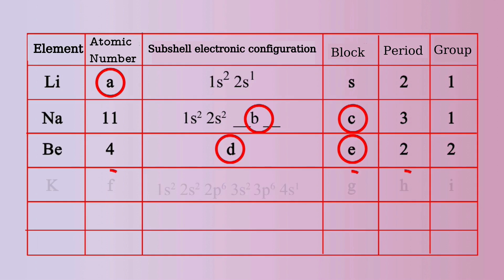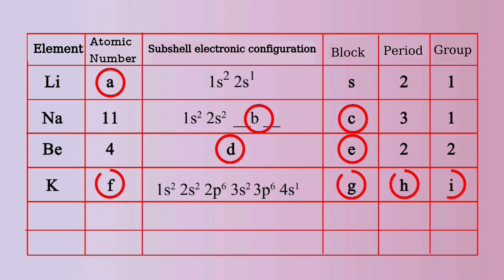For the element Potassium, the atomic number can be written. Its subshell electronic configuration is 1s2, 2s2, 2p6, 3s2, 3p6, 4s1. Its block, period, and group can be found out.